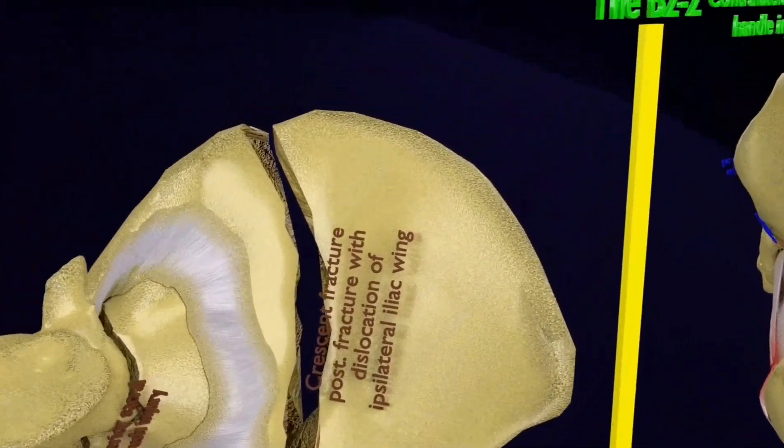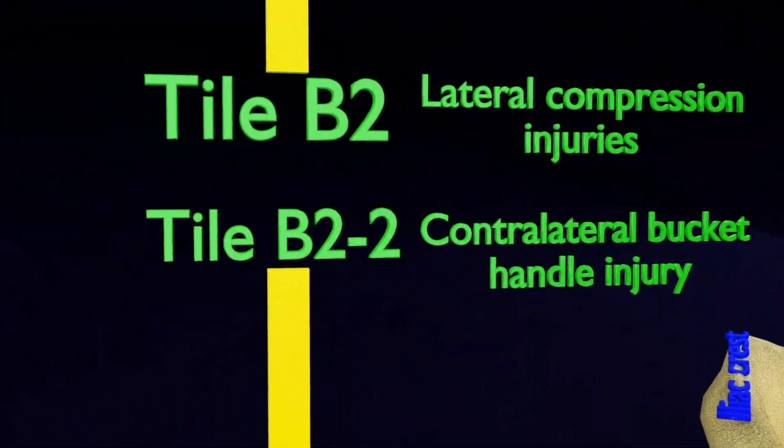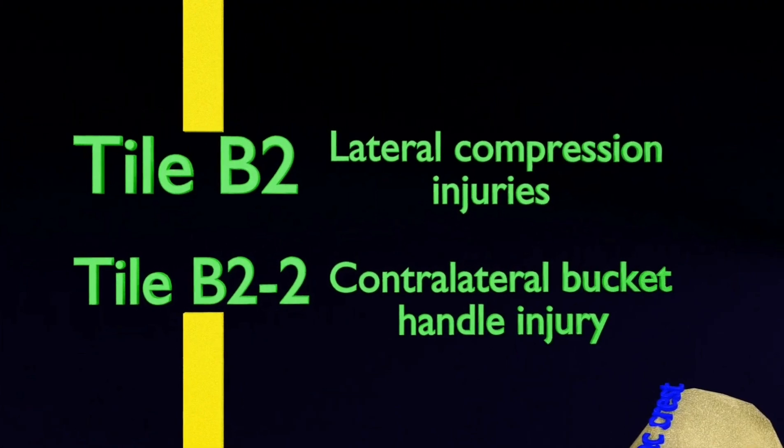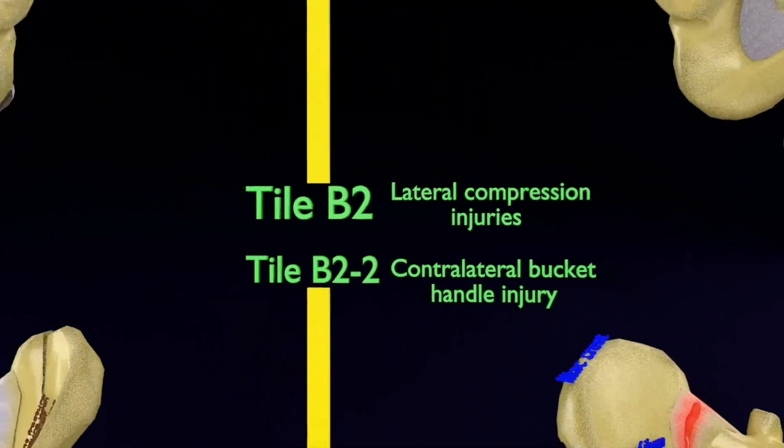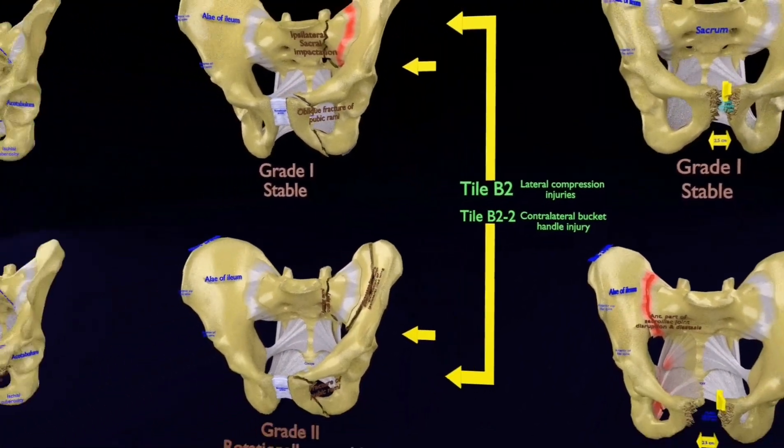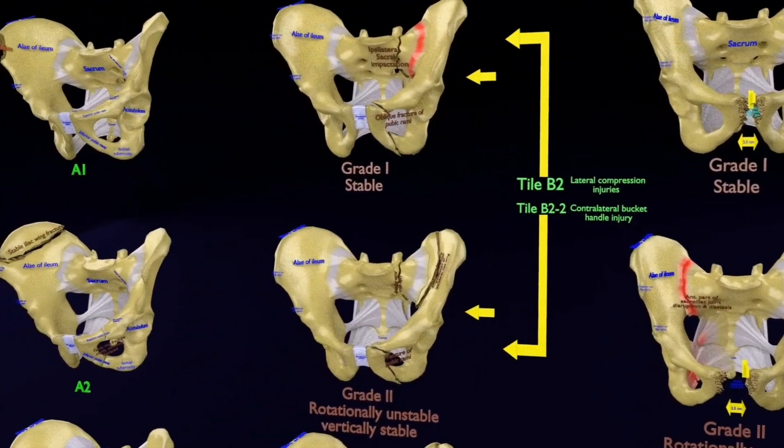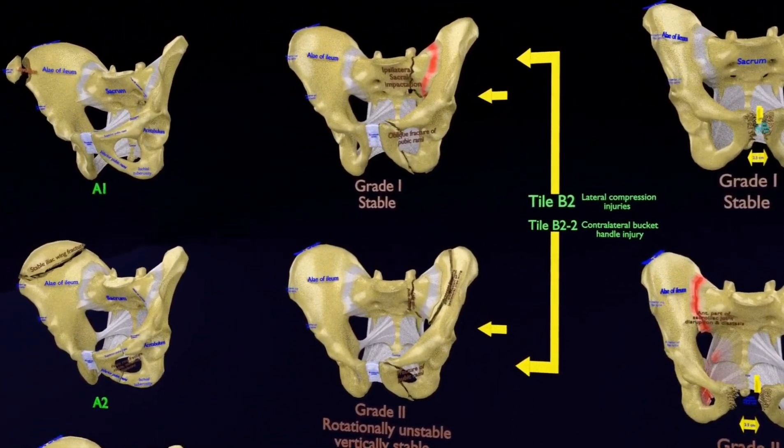These both grades come under the Tile B2, lateral compression injury, internal rotation, and B2.2, contralateral bucket handle injuries.